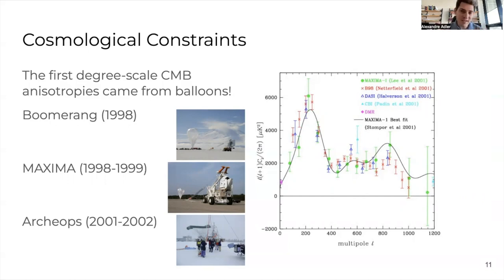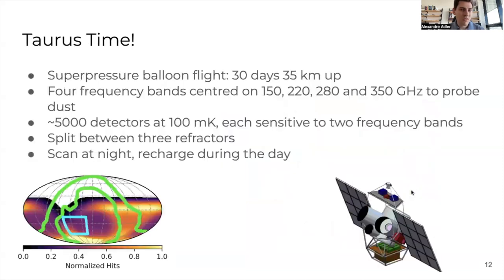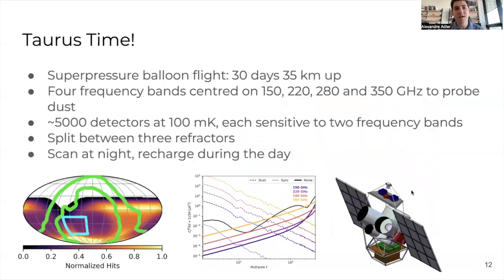So there is a lot of history on CMB and ballooning, so we know some of the challenges. We know how to fly cryogenic detectors. We know how to recover CMB data. We know how to do the analysis, how to treat the atmosphere that is still residual at these altitudes. This is the kind of legacy TAURUS is building on.